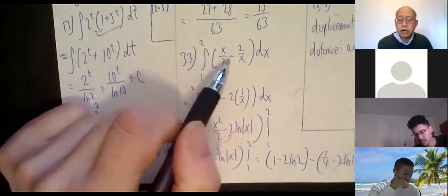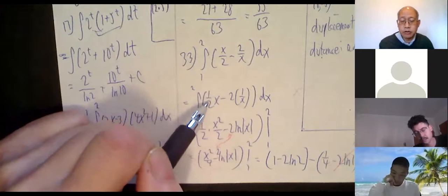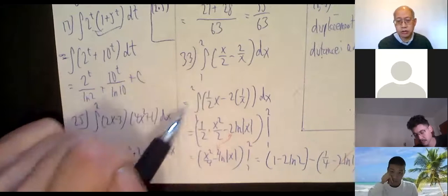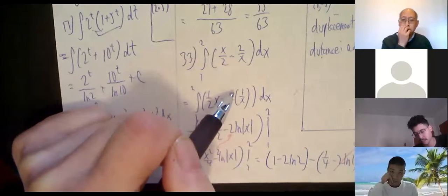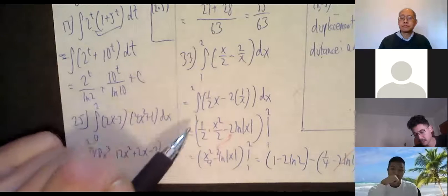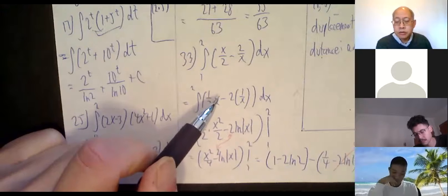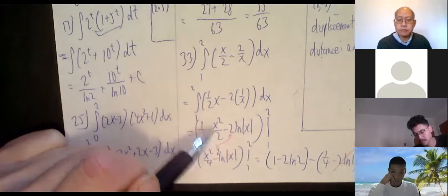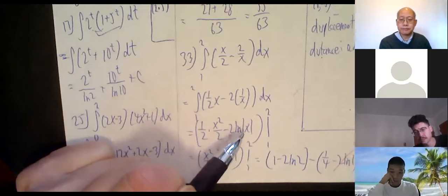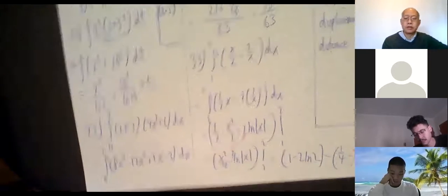Problem 33: integral from 1 to 2 of x over 2 minus 2 over x, dx. Treat x over 2 as one-half times x, so you can use the power rule — dividing by two is the same as multiplying by one-half. And treat 2 over x as 2 times 1 over x, so it becomes 2 times the natural log. The integral of x is x to the one, so we get one-half x squared over 2 minus 2 ln|x|. Don't forget the absolute value.